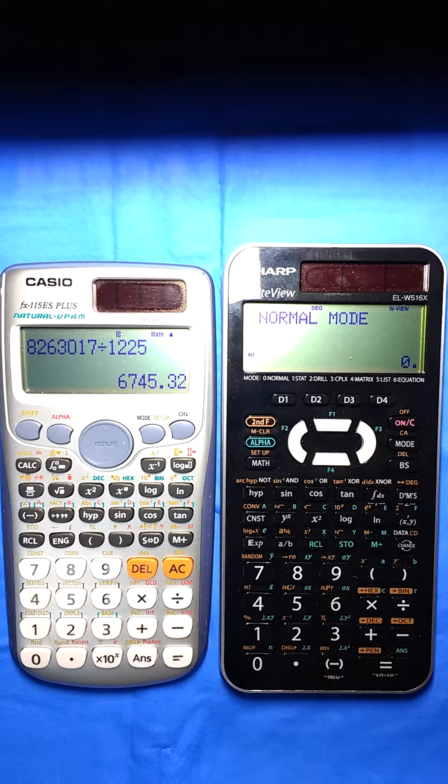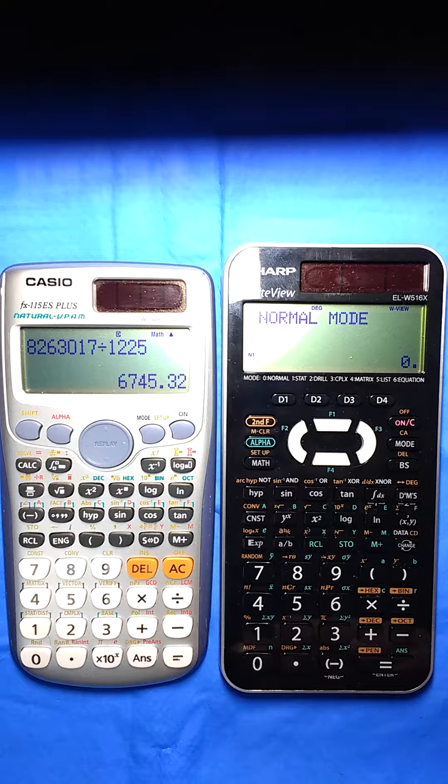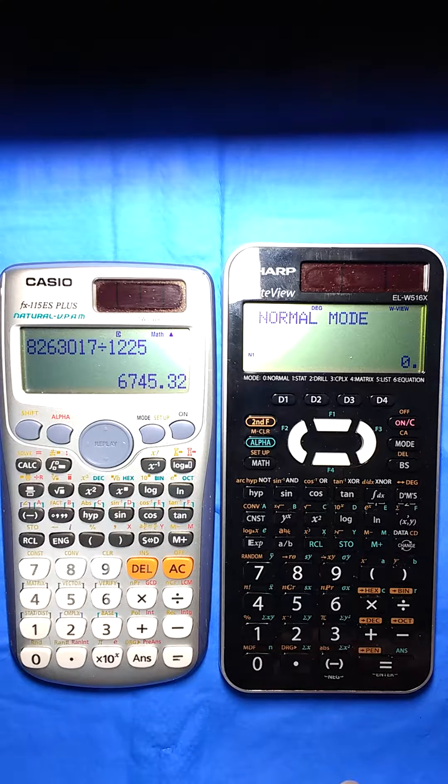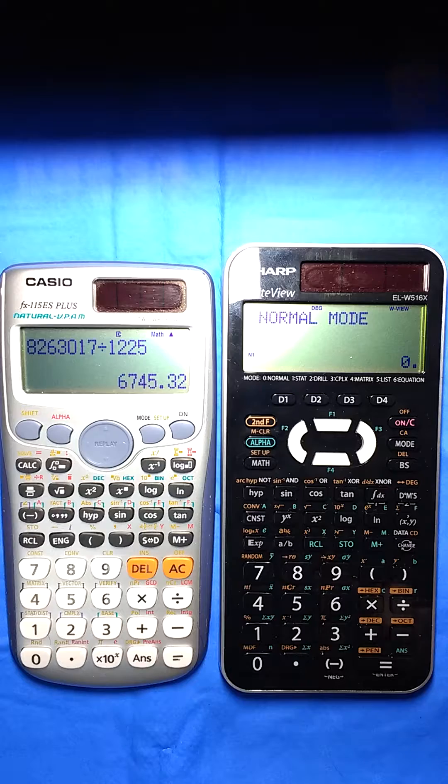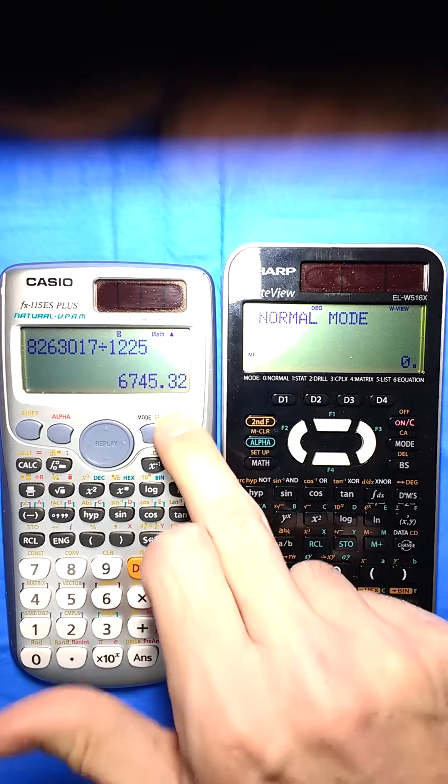The thing that I really like about the Sharp is it shows the commas. At least in America here we use commas to show the thousandth separator, and I believe that's settable on the Sharp, but on the Casio it doesn't show them at all. So let's do a quick problem here.